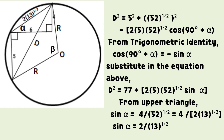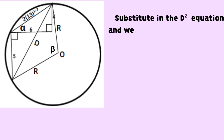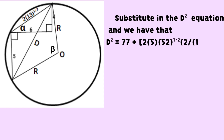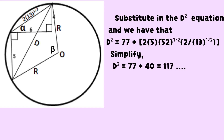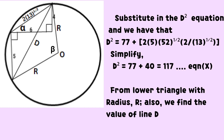From the upper triangle, sine alpha equals 2 divided by the square root of 13. The square of D equals the product of 2, the square of R, and the difference between 1 and cosine beta. Substituting into the above equation, we have a new equation in D squared. By the trigonometric identity, cosine of (180 degrees minus 2 alpha) equals negative cosine 2 alpha. Substituting into the above equation gives another equation in D squared, which we call equation Y.